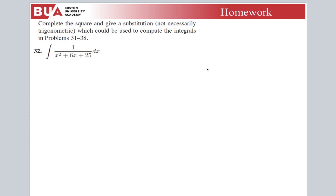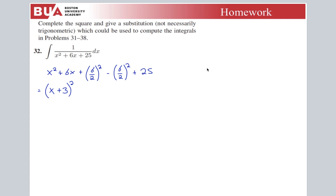Problem 32: does this one factor? I need to multiply — it's not going to factor, so complete the square again. Taking (6/2)² minus (6/2)² plus 25 gives (x + 3)² − 9 + 25 = (x + 3)² + 16. So the integral has denominator (x + 3)² + 16.